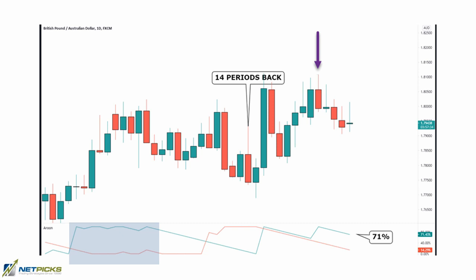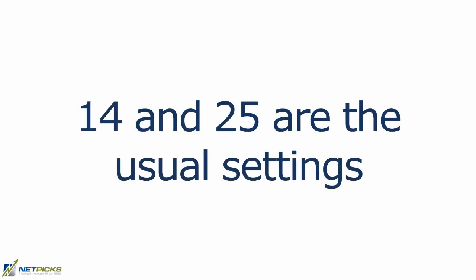In a perfect world we're going to see the up line close to a hundred percent and the down line closer to zero percent, which signifies really strong strength in the market. All that simply means is that over the last 14 periods we are closer to the last highest high and further away from the last lowest low — meaning we have a strong uptrend. Simple, right?